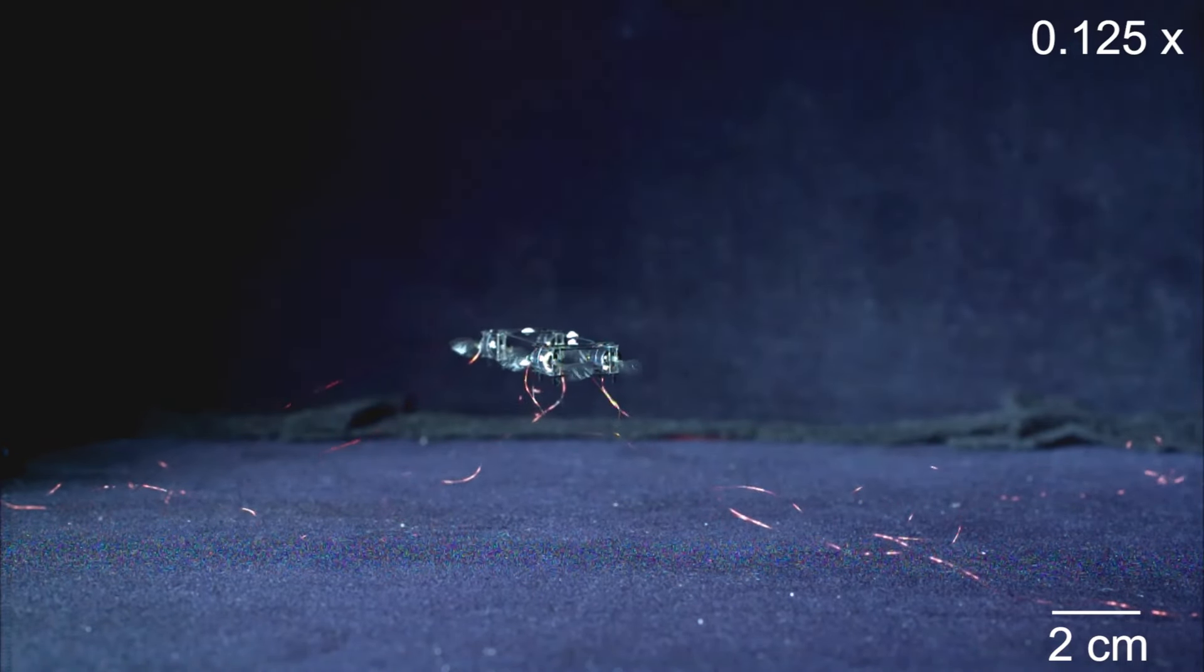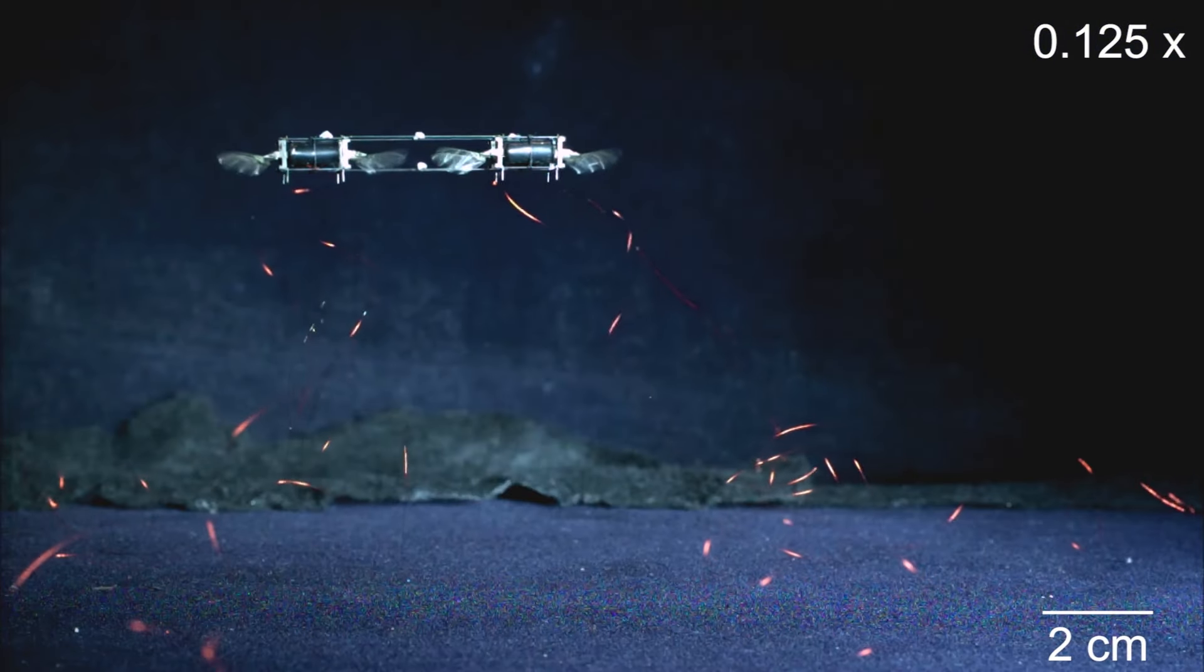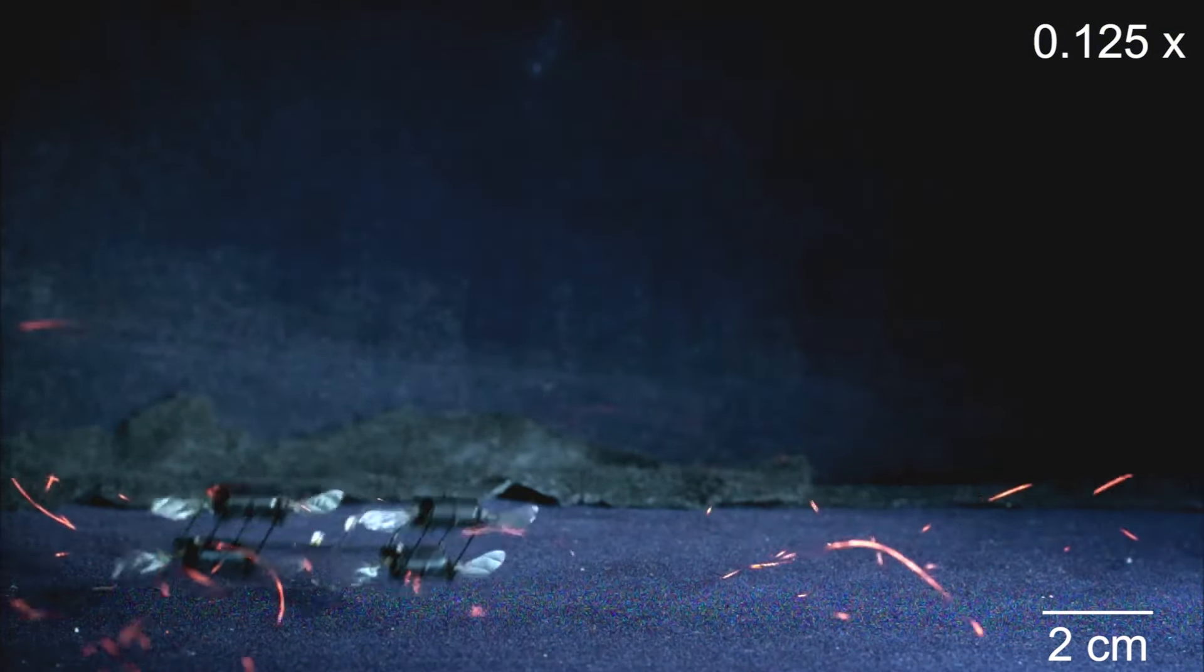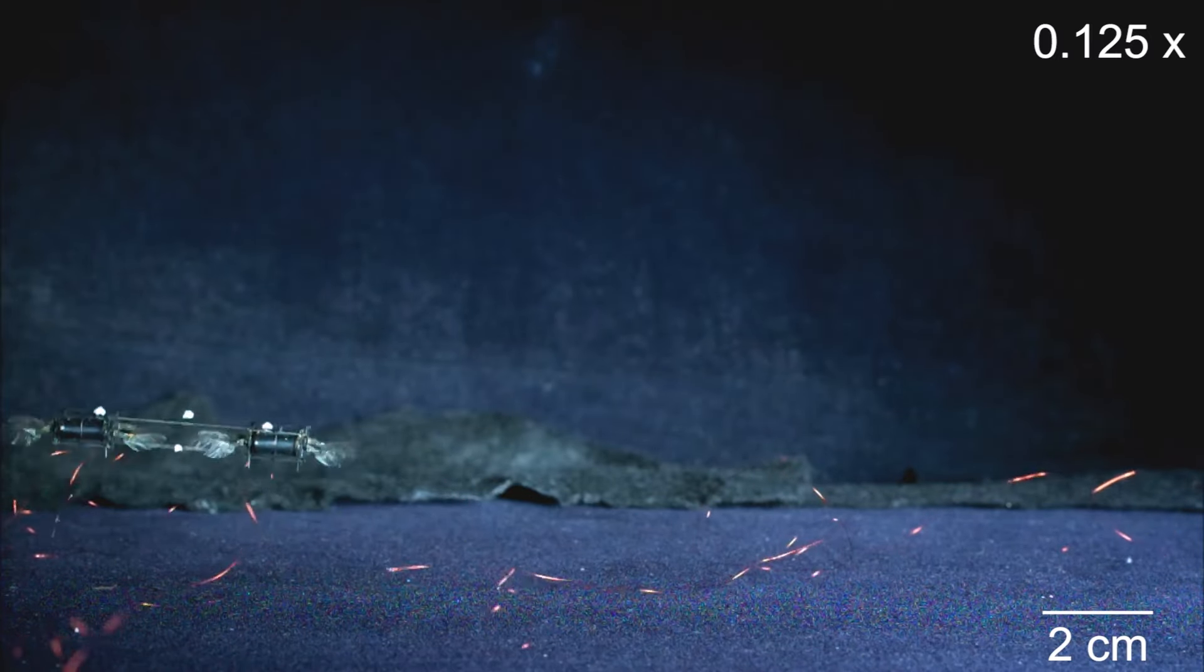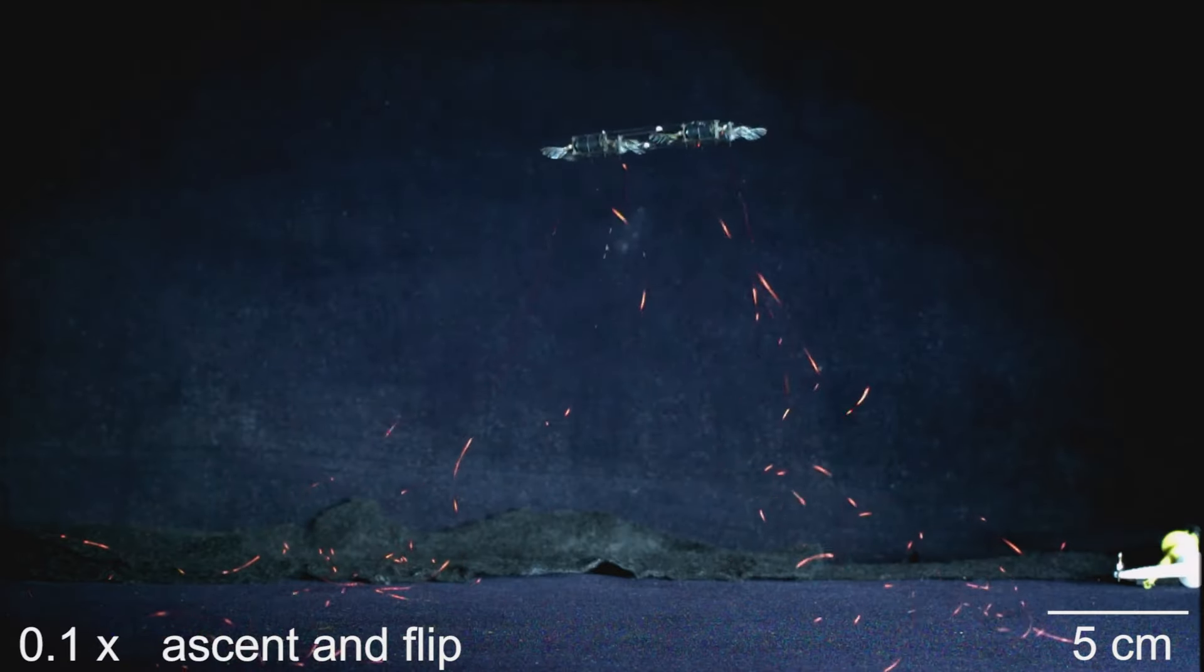However, these insect-sized drones can flap its tiny wings nearly 500 times per second, giving it the ability to recover if hit or involved in a collision, and do some aggressive maneuvers like somersaults in the air.